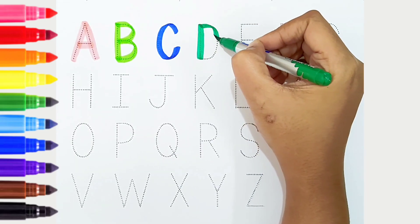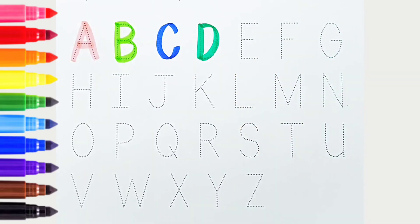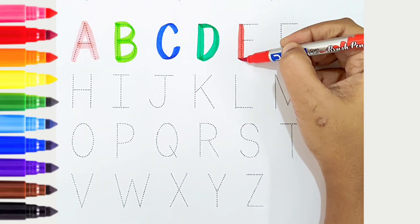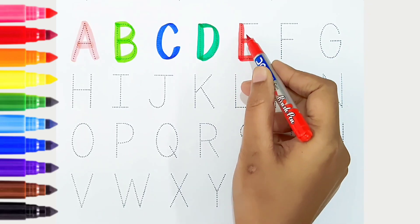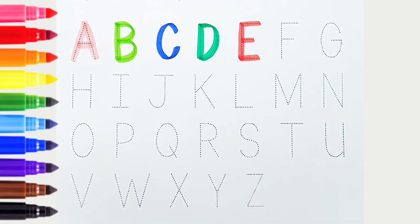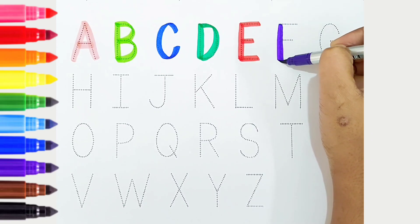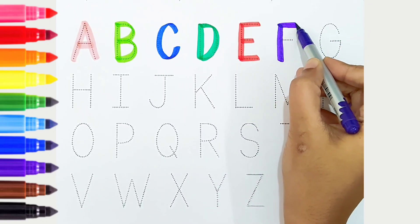D is for dog. E, red color. E is for elephant. F, violet color. F is for fish.